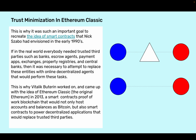Trust minimization in Ethereum Classic. This is why it was such an important goal to recreate the idea of smart contracts that Nick Szabo had envisioned in the early 1990s. If in the real world everybody needed trusted third parties such as banks, escrow agents, payment apps, exchanges, property registries, and central banks, then it was necessary to attempt to replace these entities with online decentralized agents that would perform these tasks.